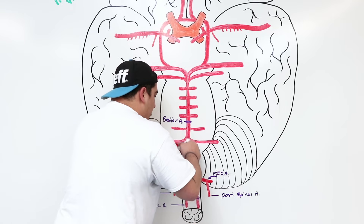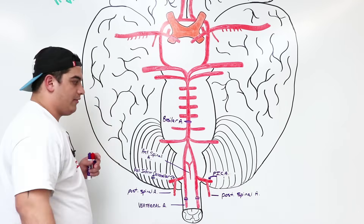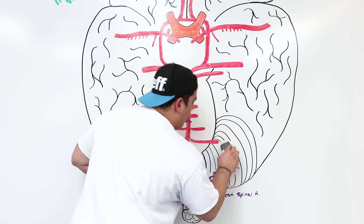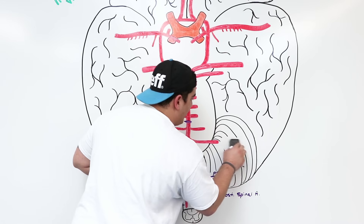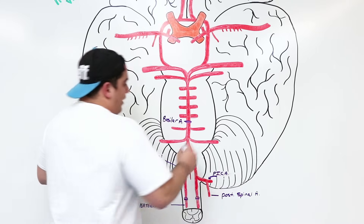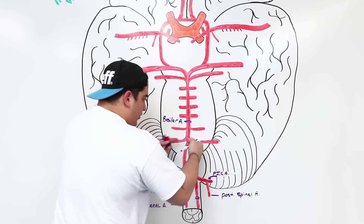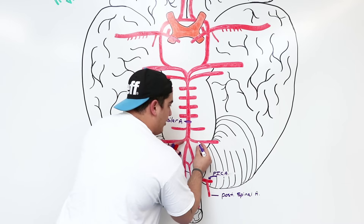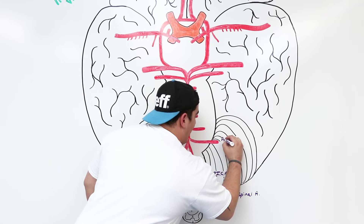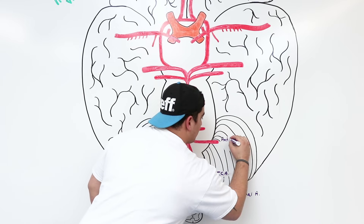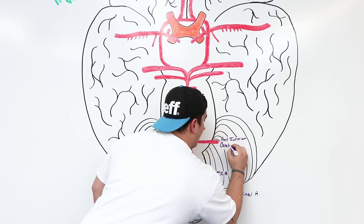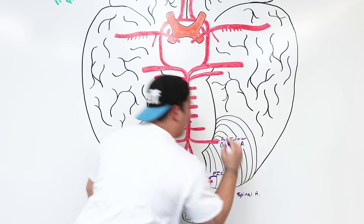As the basilar artery is formed, another branch comes off at its base. Any occlusion of these vessels can cause serious diseases and syndromes. This branch coming off the basilar artery at the level of the pons is called the anterior inferior cerebellar artery (AICA).